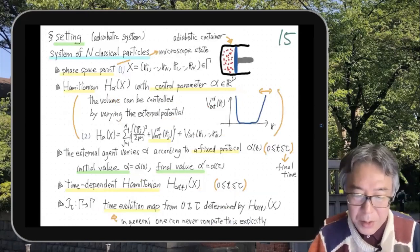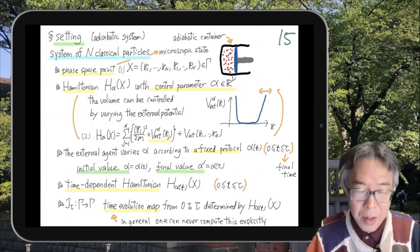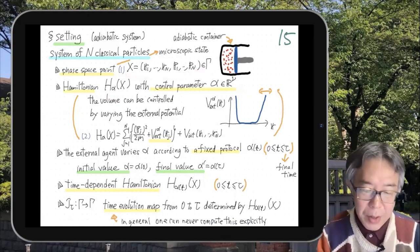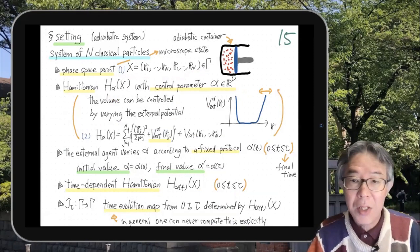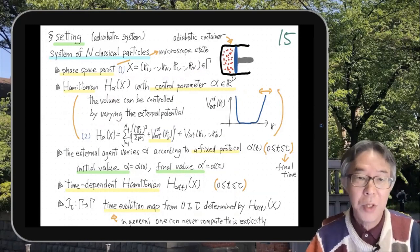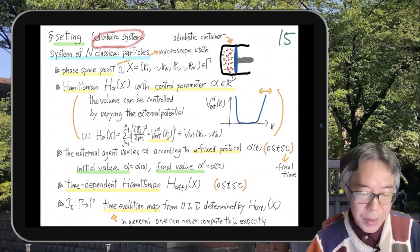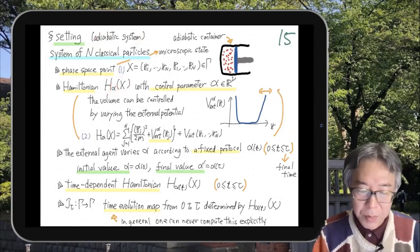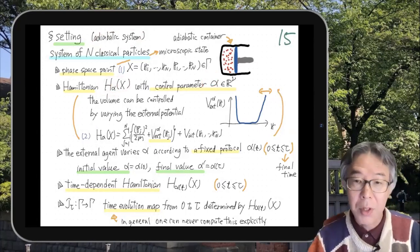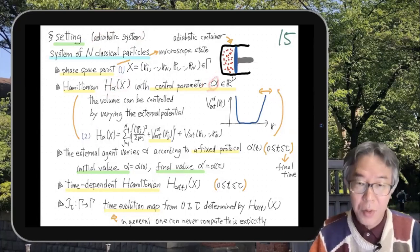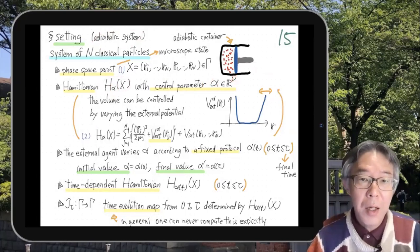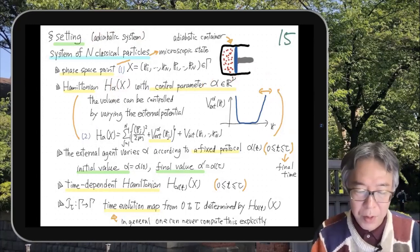Now let's go to the microscopic setting. We are going to discuss this in the setting of non-equilibrium statistical mechanics. We consider a system of N classical particles in phase space. In mechanics we do not have the notion of heat, so we can simply consider a mechanical system — that automatically gives you an adiabatic system. Let H_α be our Hamiltonian, where α is a controllable parameter characterizing this Hamiltonian; it can take values like one, two, three. One example of such a parameter is the volume of the system.